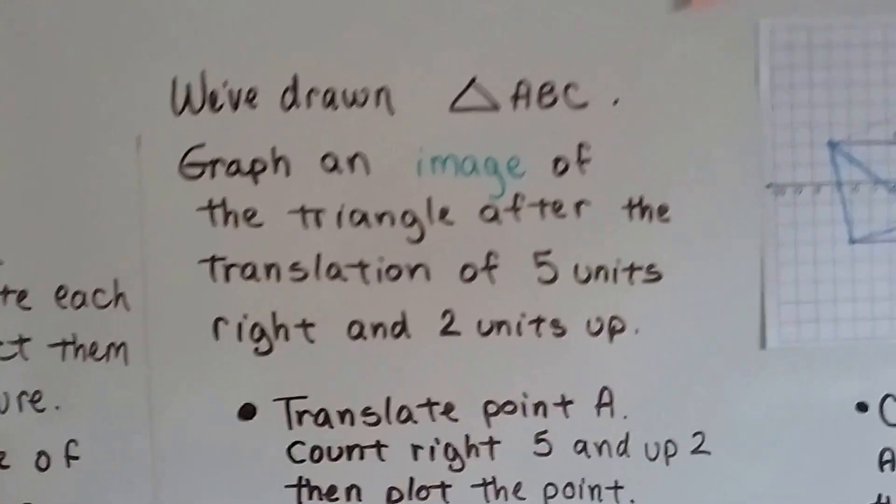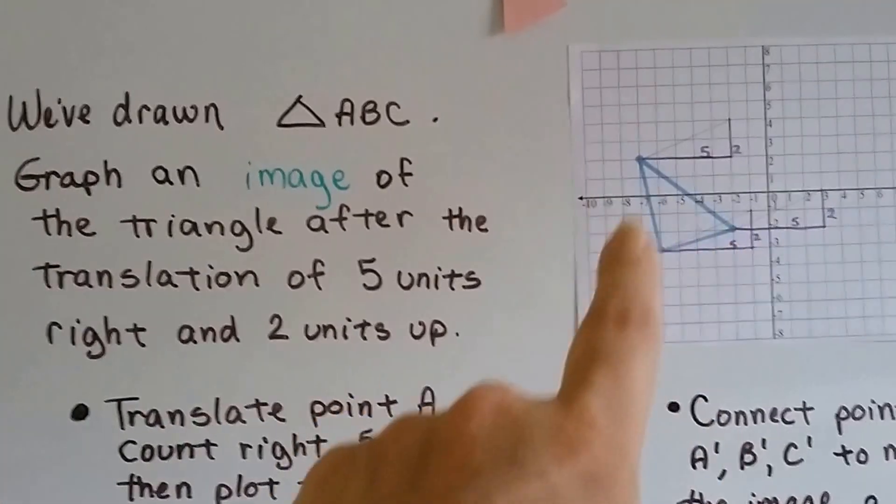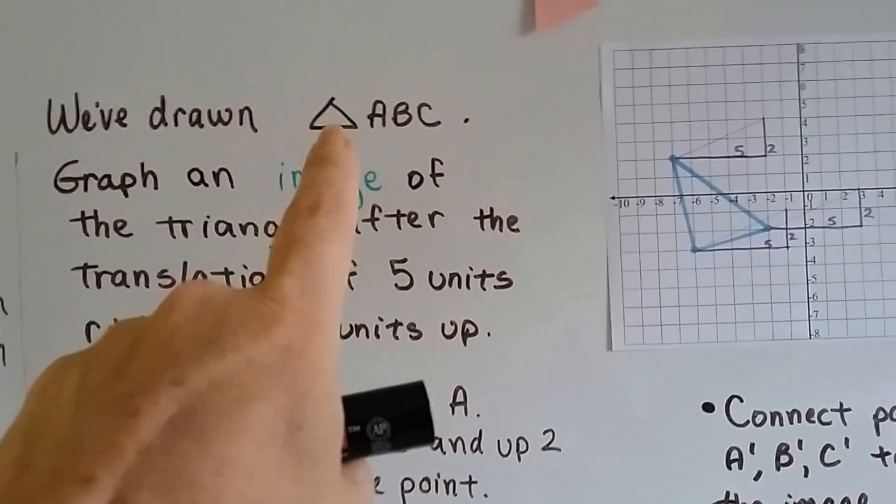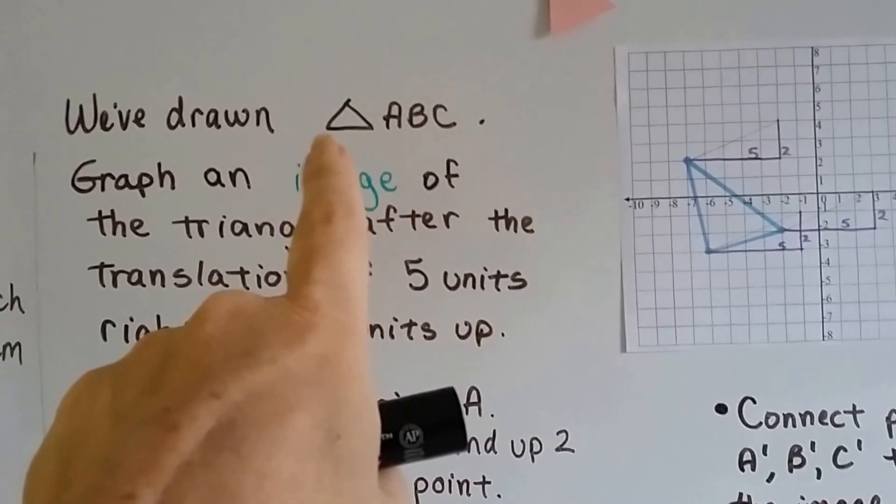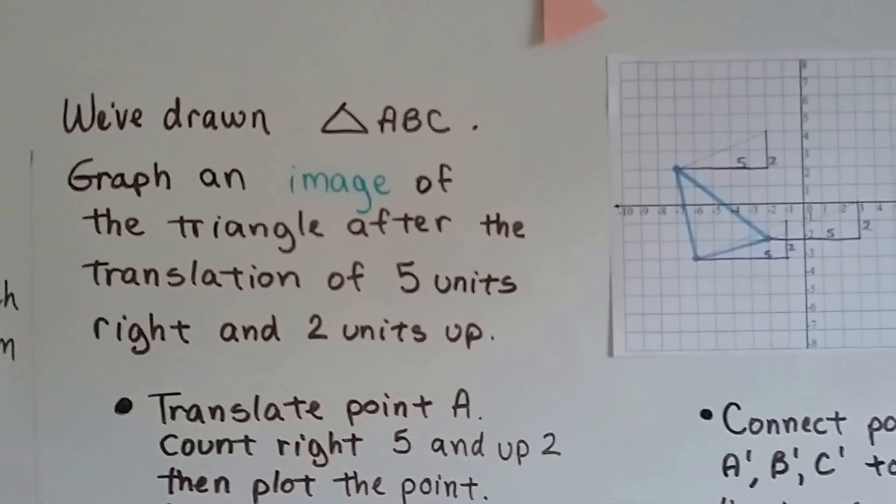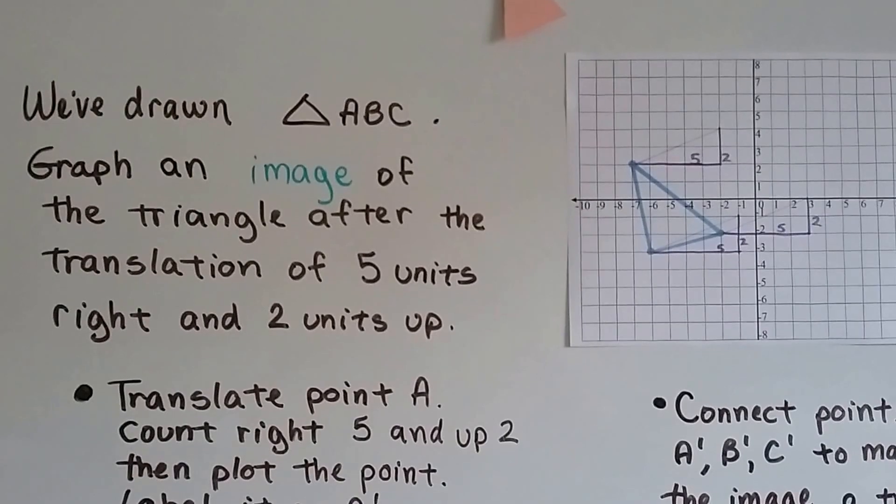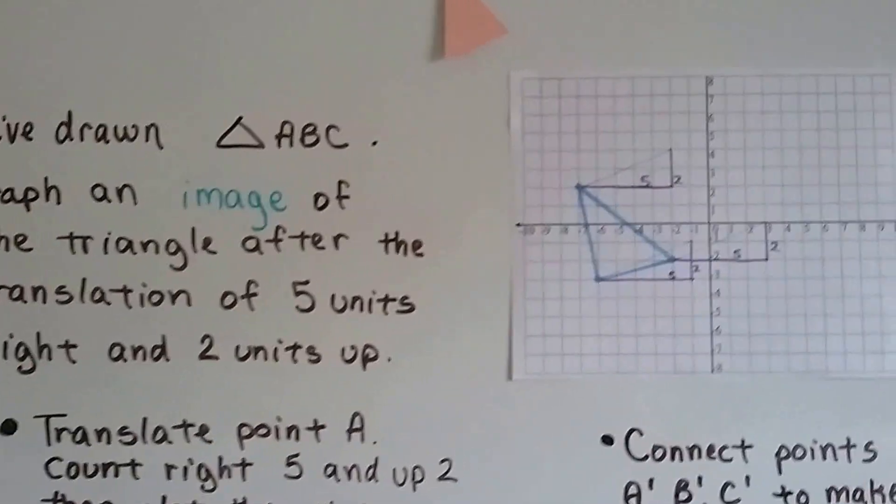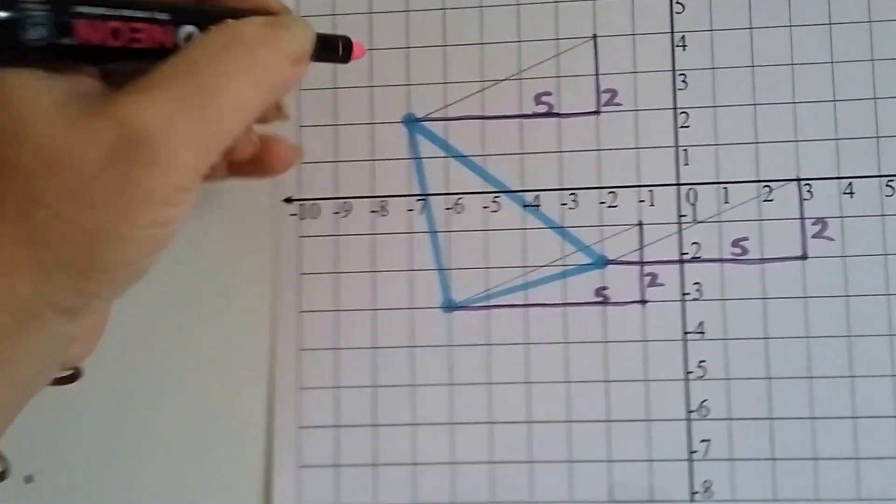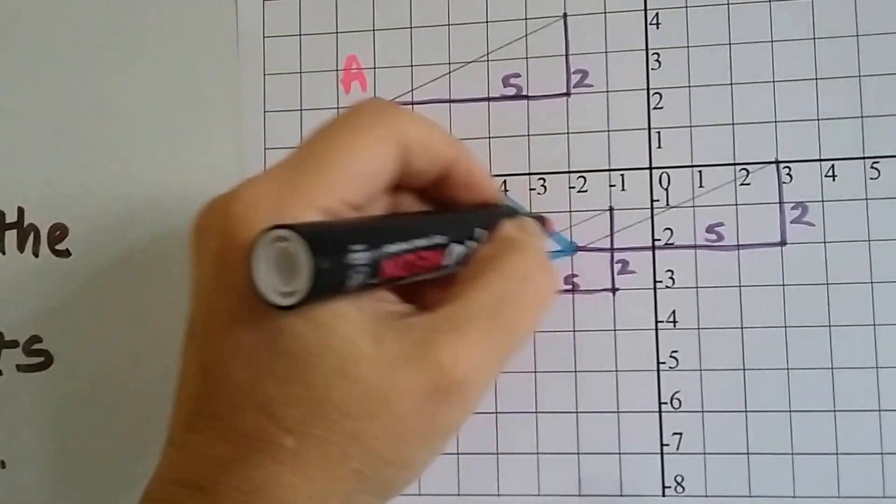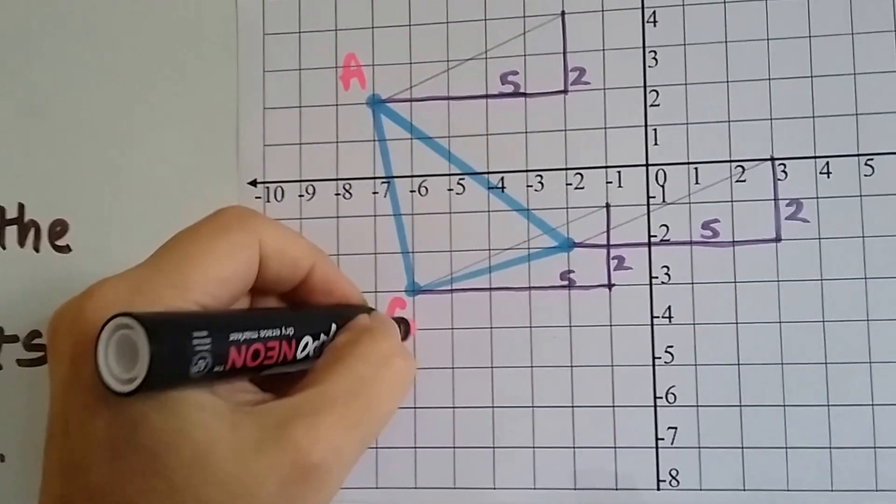Now we've drawn triangle ABC here, this blue triangle. Remember when you see the little triangle shape and then the letters, that is triangle ABC. We can graph an image of the triangle after the translation of 5 units right and 2 units up. So, we've got A here, we've got B here, and C here.